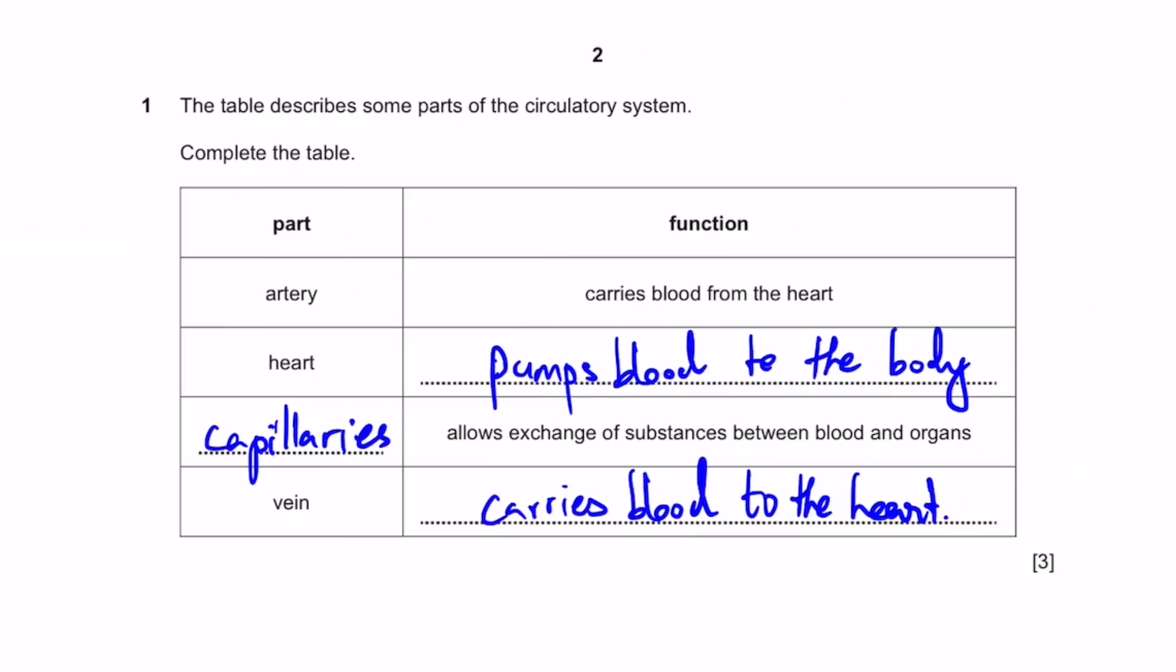Question 1. It will describe some parts of the circulatory system. Complete the table. Artery carries blood from the heart. The heart pumps blood to the body, obviously. Allows the exchange of substances between blood and organs. Capillaries. These ones are there in between heart and lungs to exchange carbon dioxide and oxygen. And the vein, it carries blood to the heart. And it carries the impure blood, the one with carbon dioxide. That's the answer.